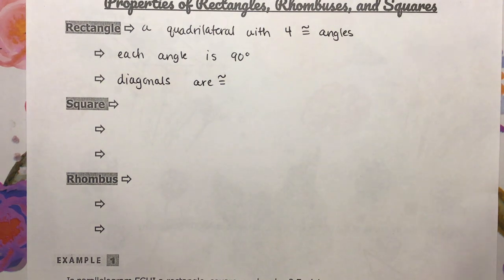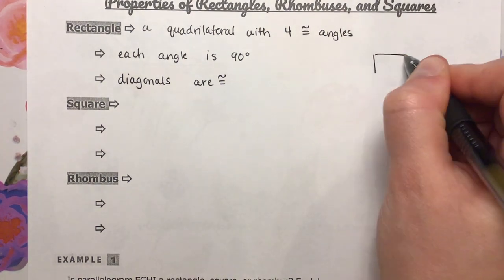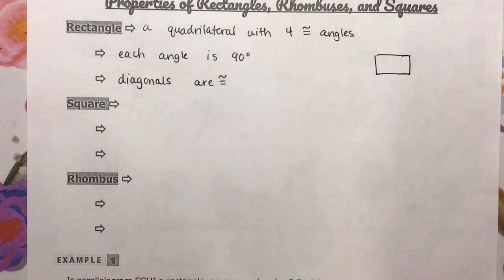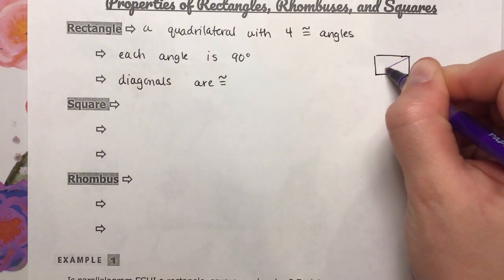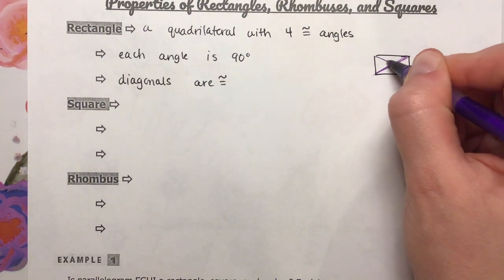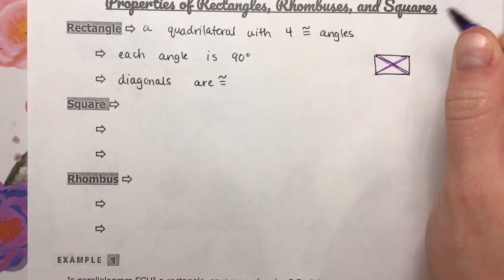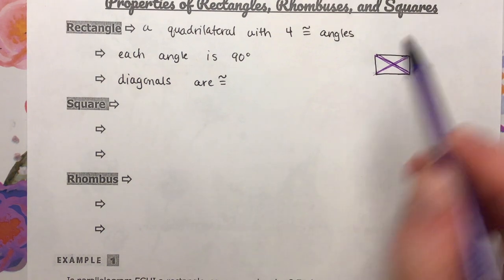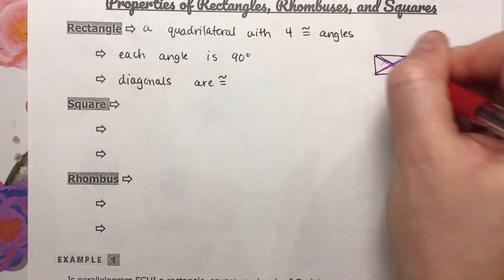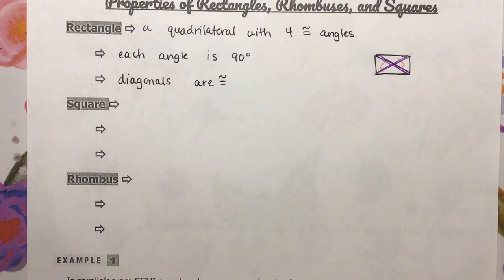If we were to draw a quick image of that — let's say this is our rectangle and we put our diagonals in. This is a diagonal, and that is a diagonal. This diagonal and that diagonal are congruent to one another; they are the same length. So all of these halves are going to be the same length as well.